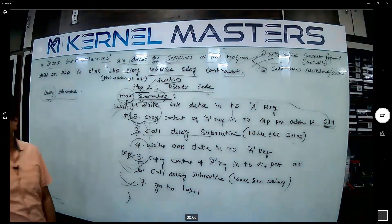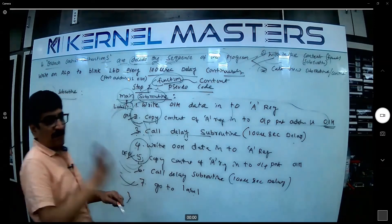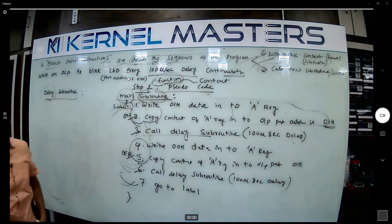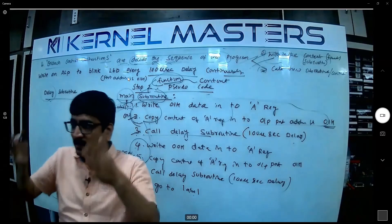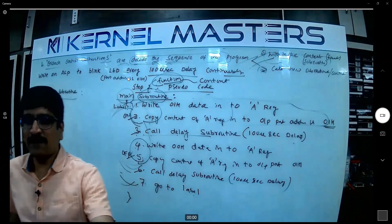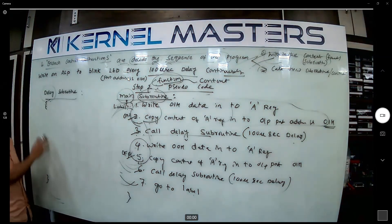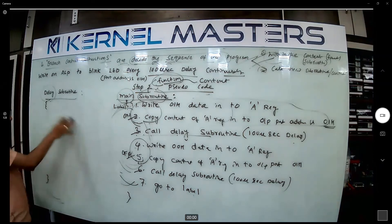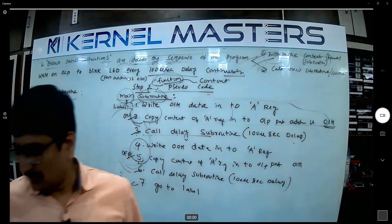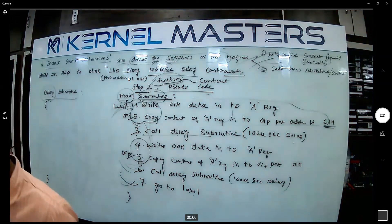These are called contexts — one context, one functionality. The delay subroutine is one context with one functionality. For example: right now I am explaining one subject — that is one context. When a phone call comes in, I open it — that is a different context. The delay subroutine generates delay — how much? 100 microseconds. One instruction alone cannot generate that much delay.